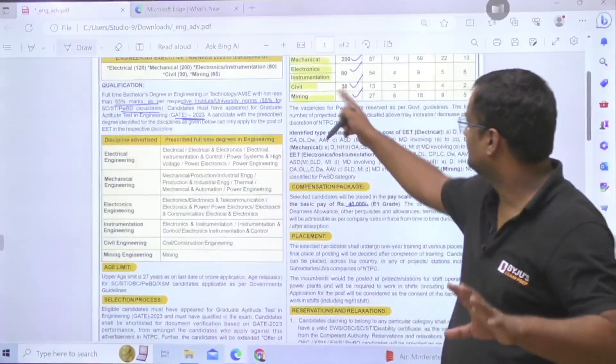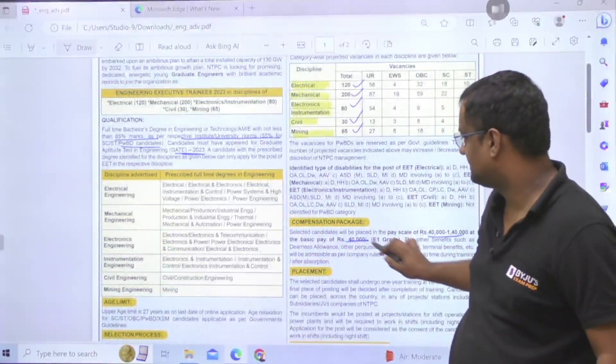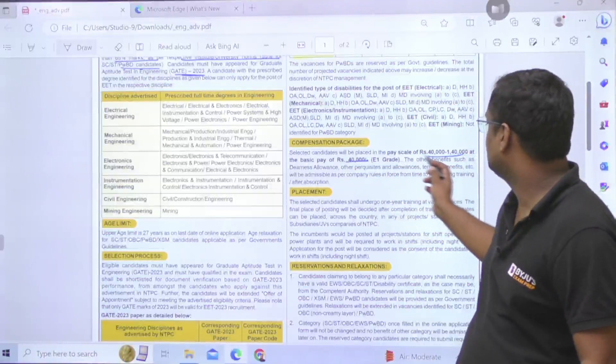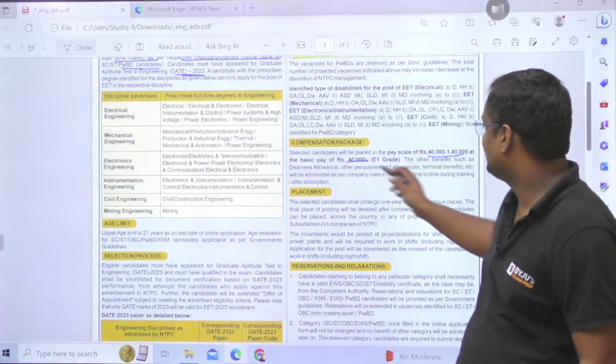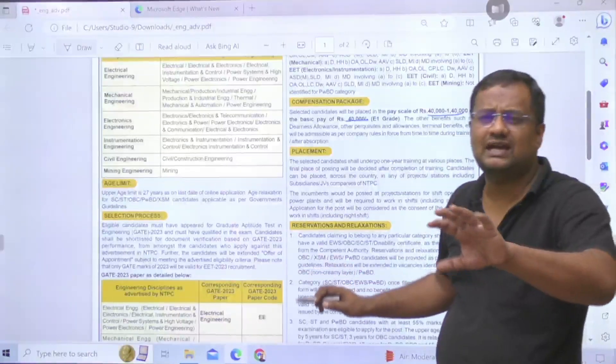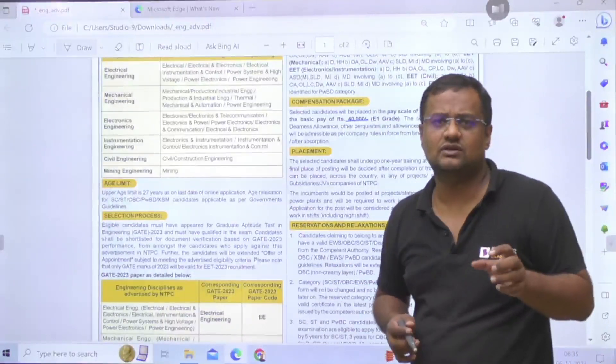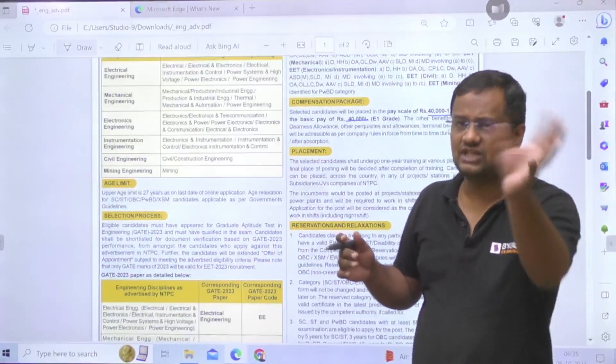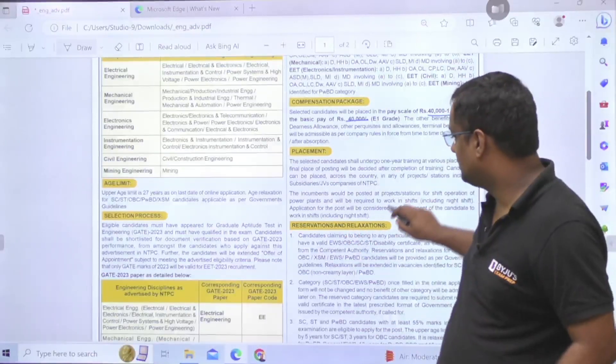Pay scale is from 40,000 to 1,40,000 at the basic pay of 47,000, that is E1 grade pay. I cannot directly compare with government services or Engineering Services because this is a public sector officer, not purely government, but that is equivalent to that.